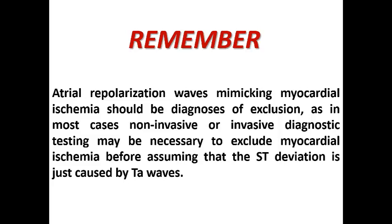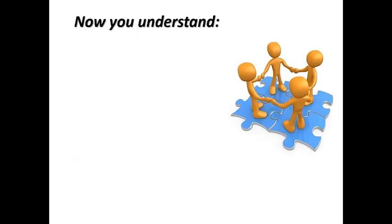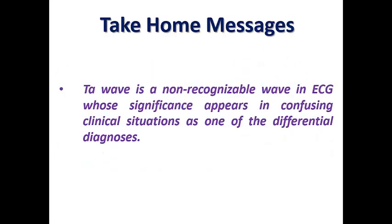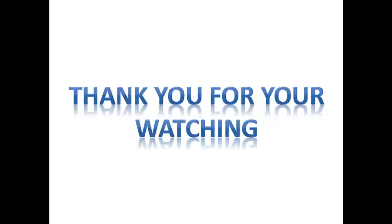Atrial repolarization waves mimicking myocardial ischemia should always be a diagnosis of exclusion. In most cases, non-invasive or even invasive coronary angiography may be necessary to exclude myocardial ischemia before assuming that ST deviation — either elevation or depression — is just caused by TA waves. Myocardial ischemia is a high-risk disease that must be excluded before attributing findings to a normal variant caused by TA waves. Our take-home message: the TA wave is an unrecognized wave in ECG, but its significance appears in confusing clinical situations as one of the differential diagnoses. Thank you very much for watching.